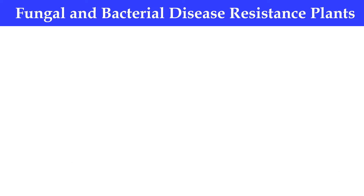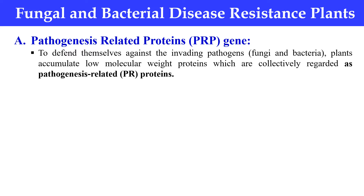How do you develop fungal and bacterial resistance plants? The basic principle is that plants already have a defense mechanism against these diseases — they already make some proteins that protect them from fungal and bacterial diseases. The main idea is that we transfer the genes for those specific defense proteins to the plants, so that we can boost their immune system against the particular disease. One example is pathogenesis-related protein genes, that is, PR genes.